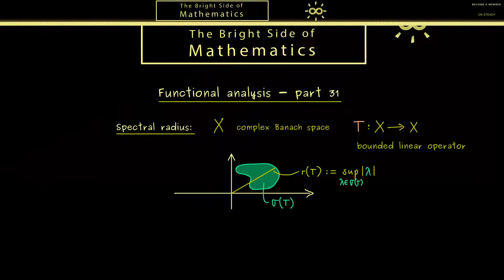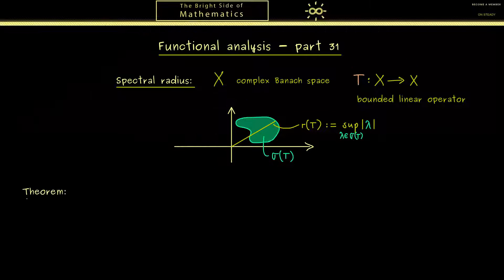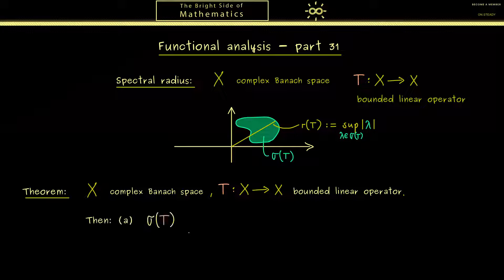Okay, now let's formulate it and then prove it. So we have a theorem with the same assumptions as before. Most importantly we have a bounded linear operator from X to X. Then our first statement is that the spectrum of T as a subset of the complex numbers is a compact set. Please recall in the last video we have already shown that it is a closed set. Therefore the new thing here is that the set is also bounded.